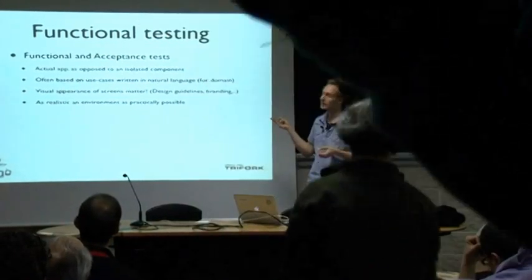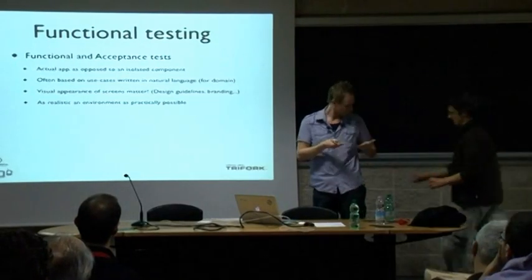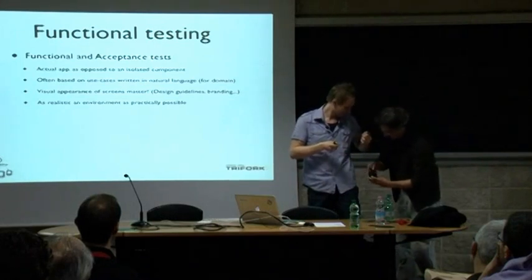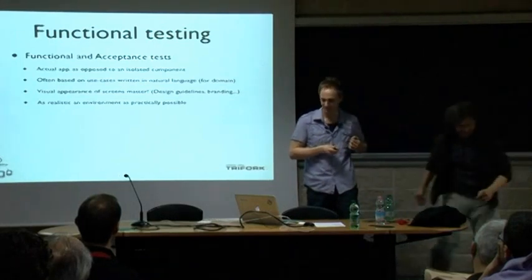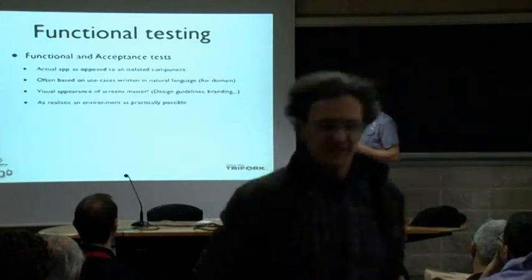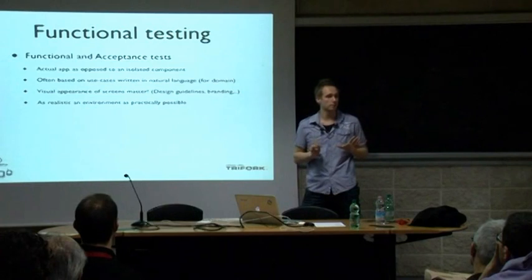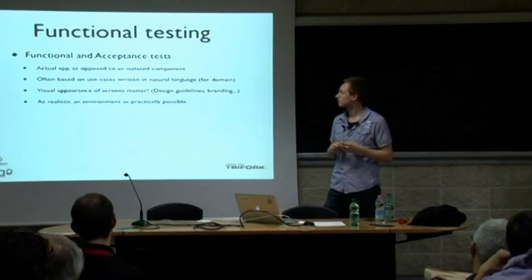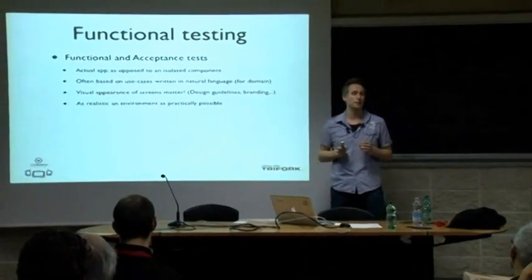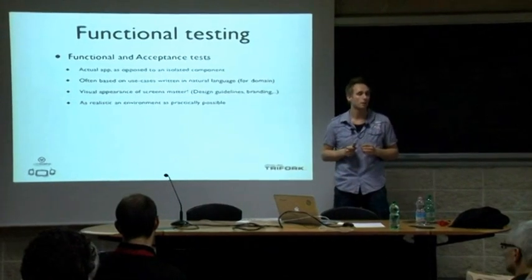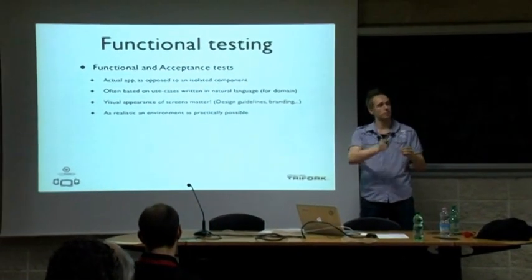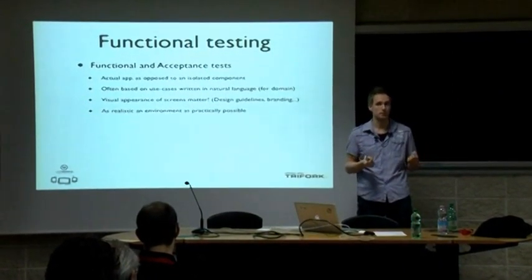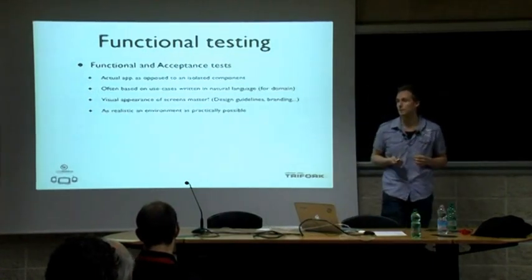Another thing that's different from a unit test is that the visual appearance of the actual application matters a lot. I may have a brand that I want presented in a specific way. For unit tests, the graphical user interface doesn't matter — but for functional testing it matters a lot, particularly for iOS and Android apps. Also, I want to test in an environment that is as realistic as possible, because it's the final thing I do just before I put my app into the App Store. I want to test on real devices and not simulators.